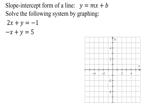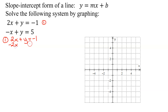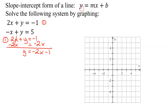So let's look at our two equations. I'm going to work on equation one first. 2x plus y equals negative 1. It's not in slope-intercept form, so I'm going to subtract 2x from both sides of this equation, and I get y equals negative 2x minus 1. Now it is in slope-intercept form.